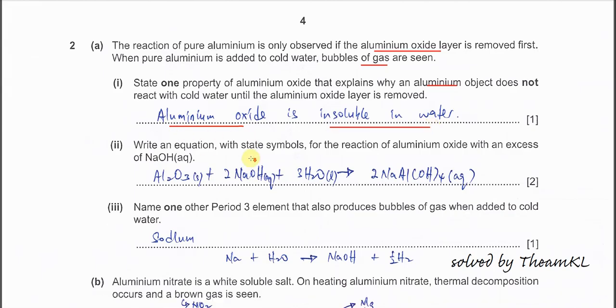Part 2. This one is quite challenging because we have state symbols. Most candidates will forget this part. This equation is the reaction of aluminum oxide with excess sodium hydroxide aqueous. So aluminum oxide will react with sodium hydroxide solution when there is a presence of water. So water must be there. Without water, it cannot form this compound.